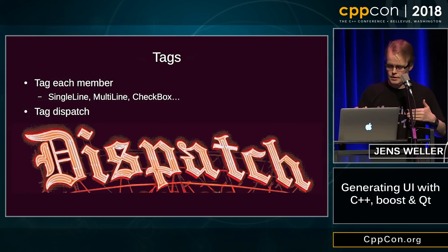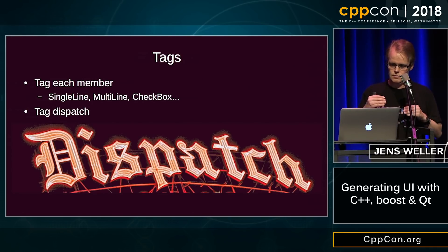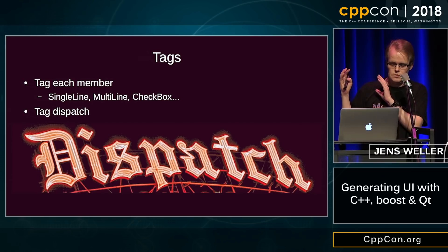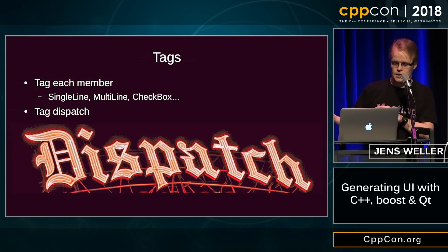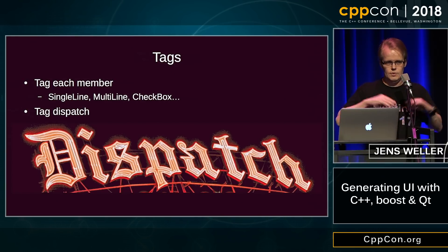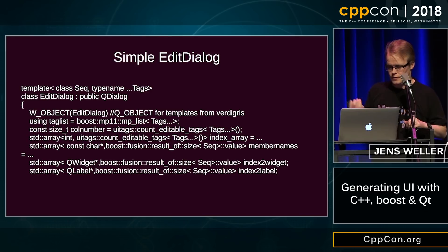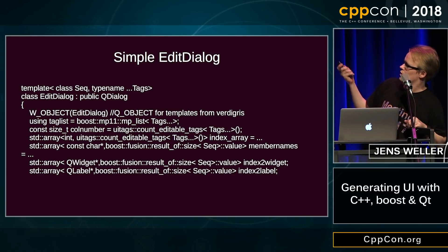But if I want to generate UI, I need a connection between what the data member is and what the control is. For that, I currently use tags, because a string or an int can map to so many other things. So I apply tag dispatching — and this is how it looks when the actual class is determined.